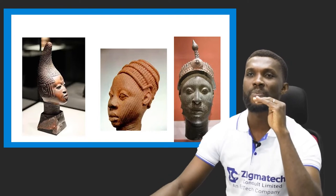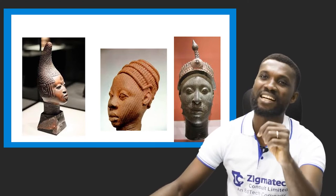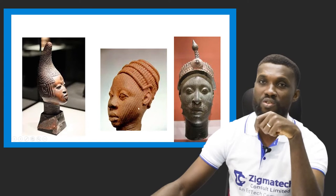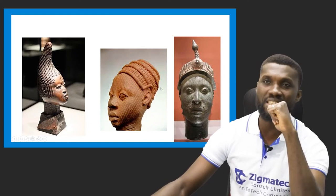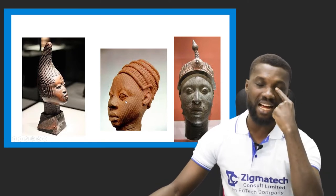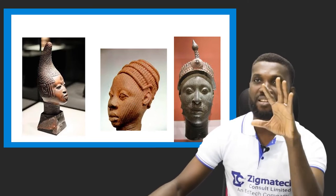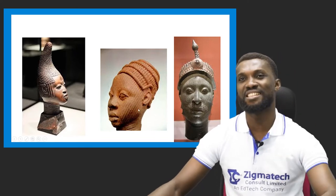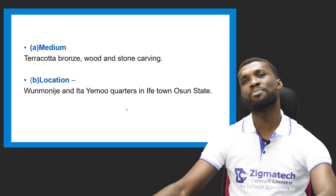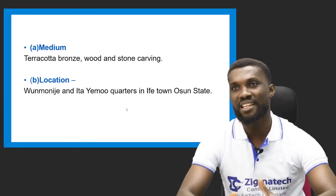These are some of the Ife artworks — see how beautiful, artistic, elegant, and strong they look. Some of these works were made with bronze, while some are terracotta works, some are casted, and some are made with wood. The medium used by the Ife people includes terracotta, bronze, wood, and stone. The location where Ife art was found is the Eta Iyemu quarters in Ile-Ife town in Osun State.